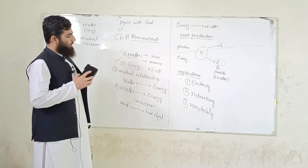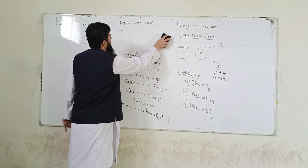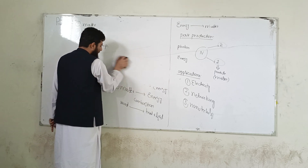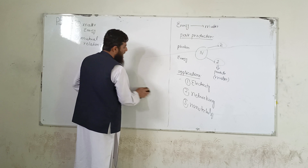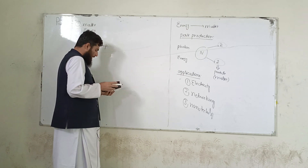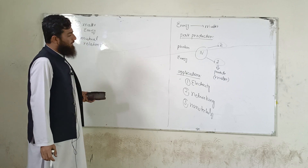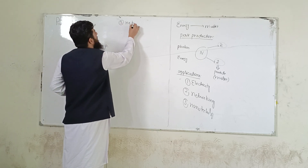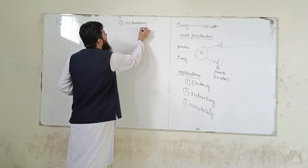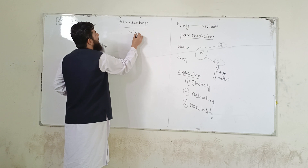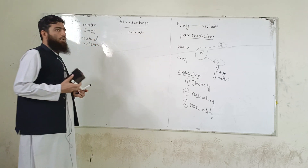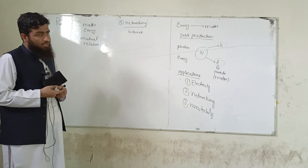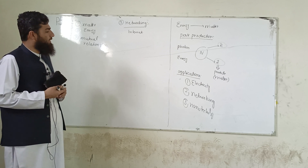Electricity، networking اور nanotechnology یہ physics کے تین بڑے فائدے ہیں۔ بجلی physics کی سب سے بڑی application ہے — بجلی کے آنے کے بعد physics نے دنیا میں انقلاب برپا کر دیا۔ Networking کے حوالے سے، modern internet، WhatsApp، Facebook، Instagram، Google — یہ ساری چیزیں networking کی category میں آتی ہیں اور یہ physics کی وجہ سے ممکن ہوئیں۔